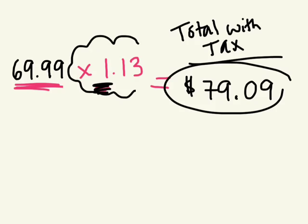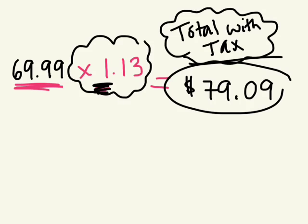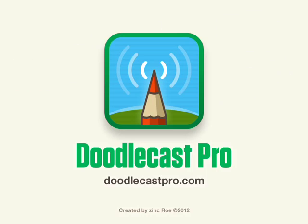So to calculate the total with the tax, all we need to do is multiply the original number.